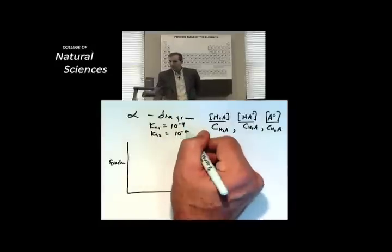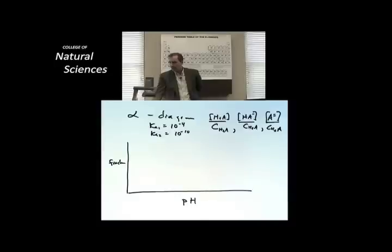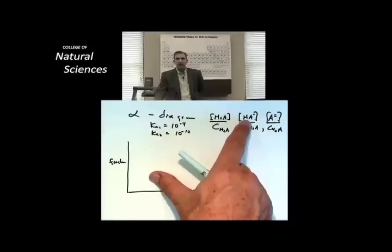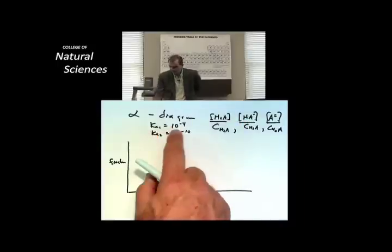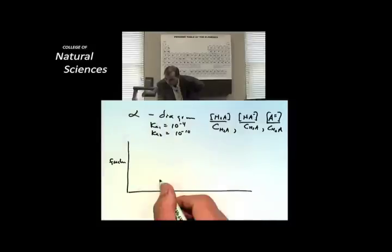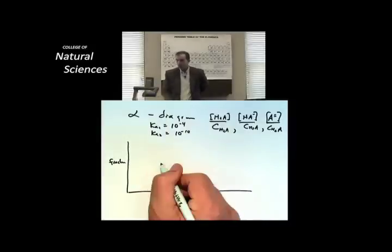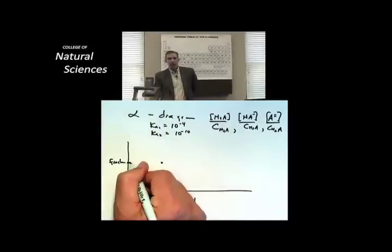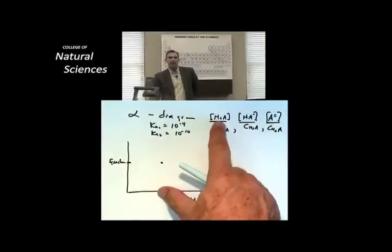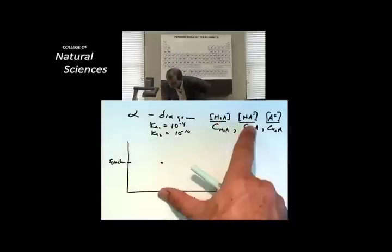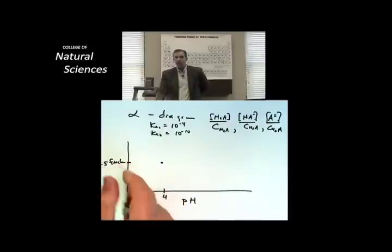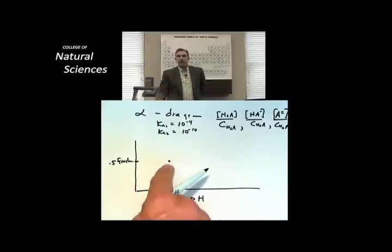Isn't it true that when I have equal amounts of H2A and HA minus that the pH is equal to the pK? Think about that. That's telling me that there is a point at pH 4 where 50% of the material is H2A, half of it is H2A, and half of it is HA minus. So at this point right here, at point 4, right there, I've got 50-50 H2A and HA minus.